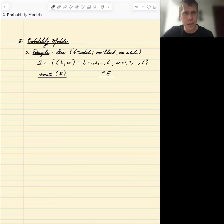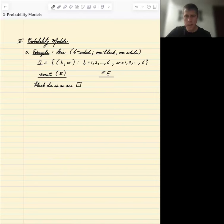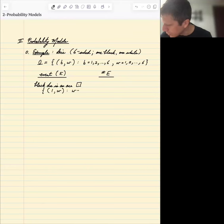So the event here is going to be that the black die is an ace. The ace being the one on the black die. This, in mathematical terms, is the set of all pairs where B is equal to one and W is arbitrary. So the number of ways for this to happen is one, one, one, two, up to one, six. There are six ways.